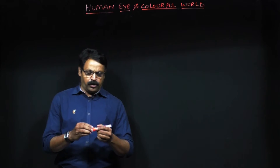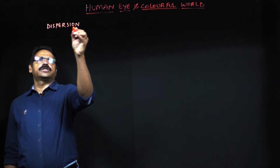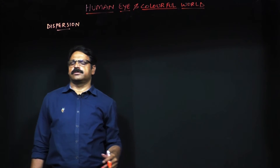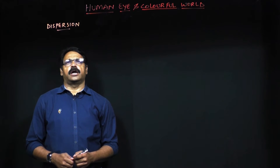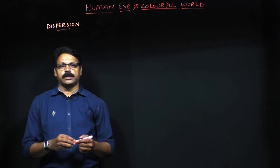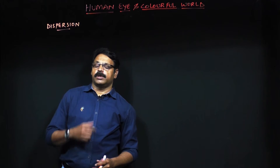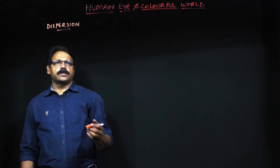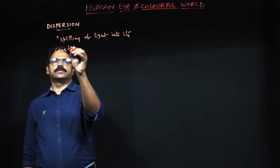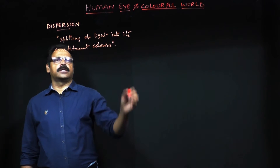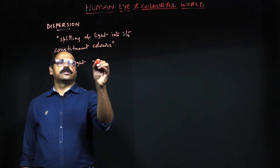Now we look at one phenomenon of light called dispersion. So far we have seen reflection, refraction, and radiation — light is in the form of radiant energy and does not require any medium. Now we are going to look at what dispersion means. Dispersion is nothing but the splitting up of light into its constituent colors.